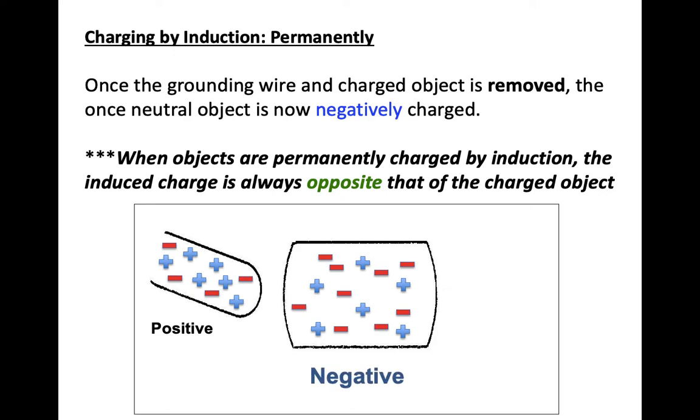So if I bring a positive object near my neutral object and I have a grounding wire, I will produce once neutral becomes negative, the opposite of what we started with.